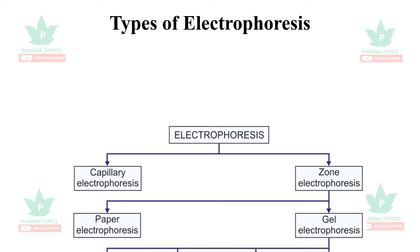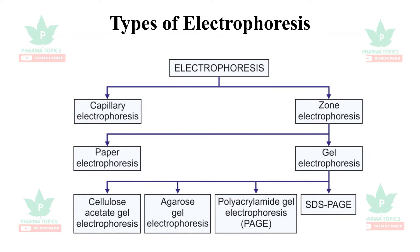There are two major types of electrophoresis: capillary electrophoresis and zone electrophoresis. Zone electrophoresis is subdivided into paper electrophoresis and gel electrophoresis. Gel electrophoresis is very widely used and includes types such as cellulose acetate gel electrophoresis, agarose gel electrophoresis, polyacrylamide gel electrophoresis, and sodium dodecyl sulfate PAGE.